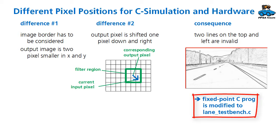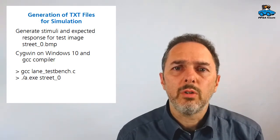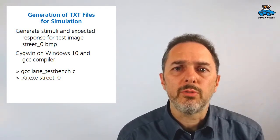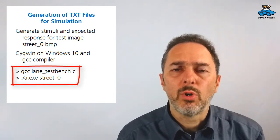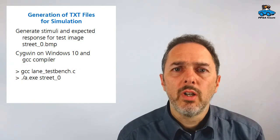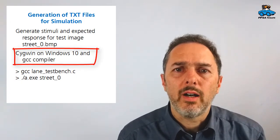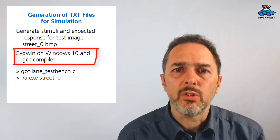which is called Lane TestBench. From the test image Street Zero in bitmap format, we generate stimuli and expected response by executing the C program Lane TestBench. For the design, I use the Cygwin environment on Windows 10, but you can adapt the C program to any other C compiler.